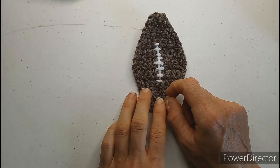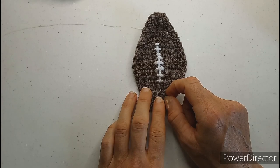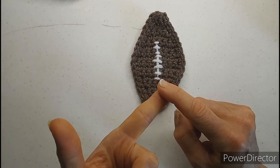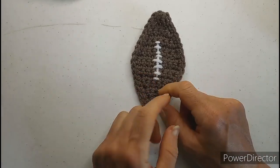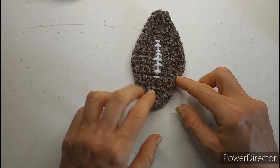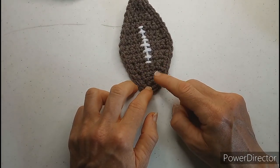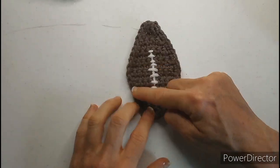Now this was kind of a new stitch for me. Two together means you're going to have two stitches, but bring them together into one. So that's where you're going to decrease your stitches until you come down to the end, and then you're going to single crochet around the entire length of your football.